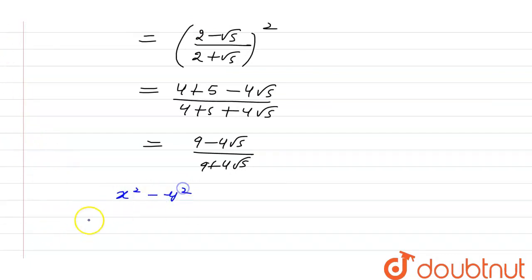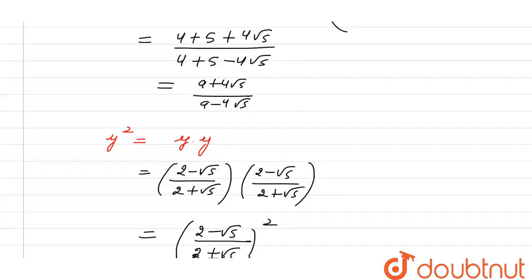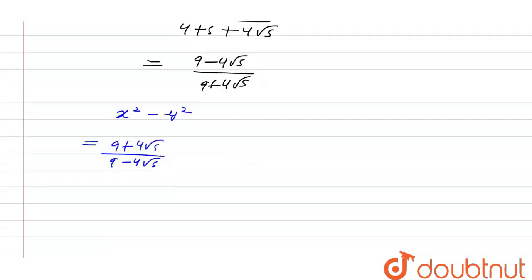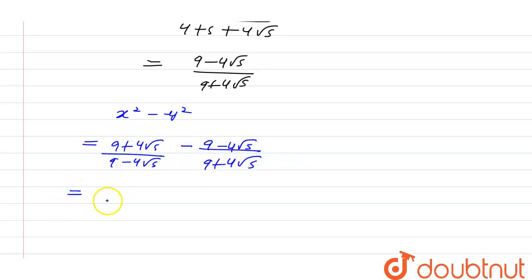Now we need to subtract x² minus y². x² is (9 + 4√5)/(9 - 4√5) and y² is (9 - 4√5)/(9 + 4√5). We take the LCM, which is (9 - 4√5)(9 + 4√5), giving us (9 + 4√5)² minus (9 - 4√5)² in the numerator.